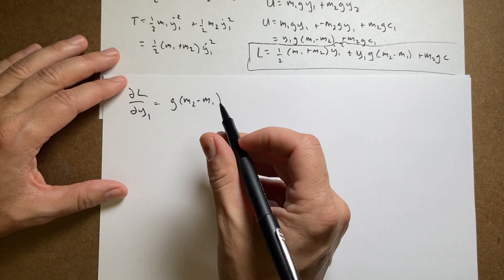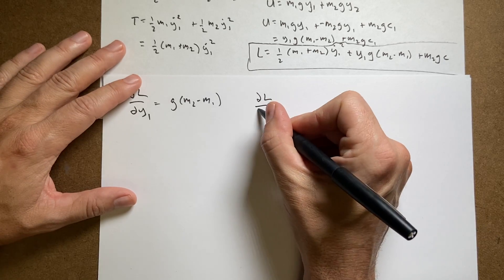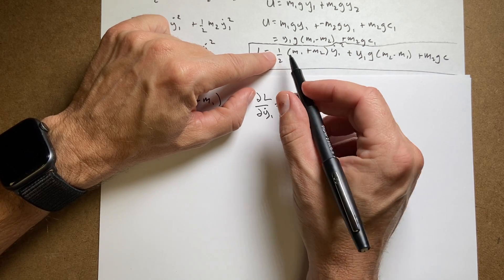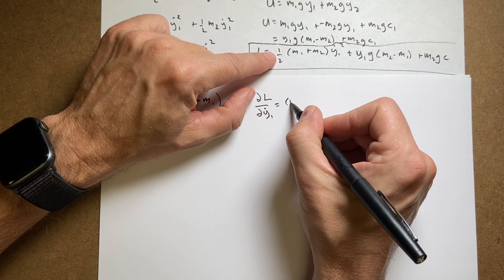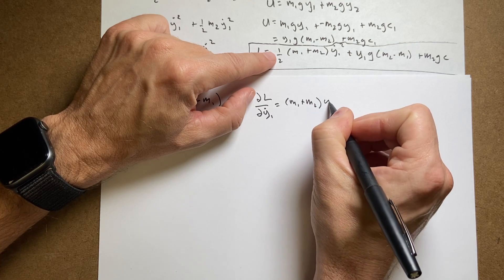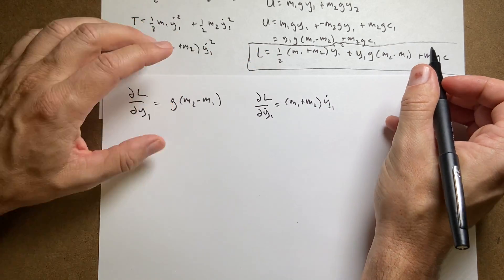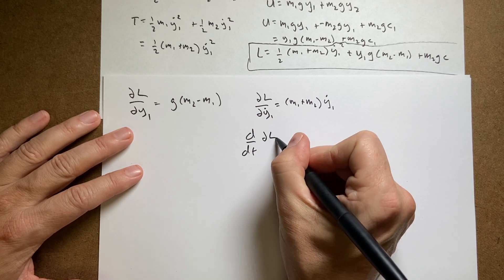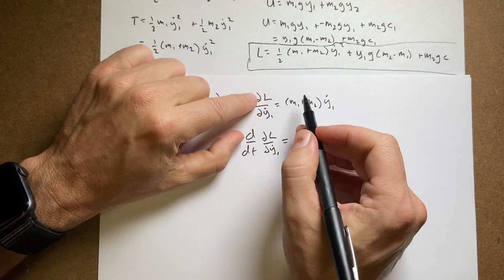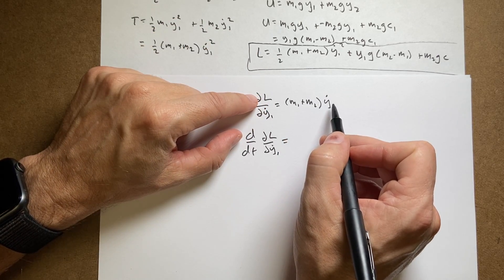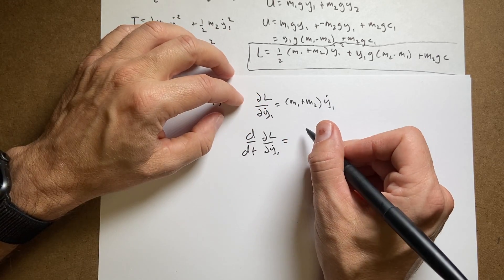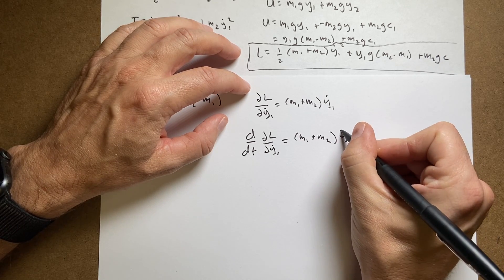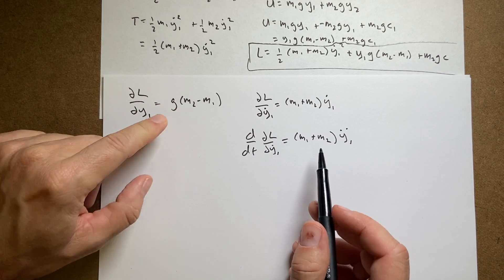Now I'm going to take the partial of L with respect to y1 dot. So this term has it, right? So I get a power of 2. So the 2 comes down. I get 2 over 2 is 1. I get m1 plus m2 y1 dot. And there's no other y dots. Now I can take the derivative of this with respect to time, d dt of the partial of L with respect to y1 dot. It's going to be equal to, well that's just a constant. And then the derivative of y1 dot with respect to t is y1 double dot. So I get m1 plus m2 y1 double dot. So now I have this minus this equals 0.